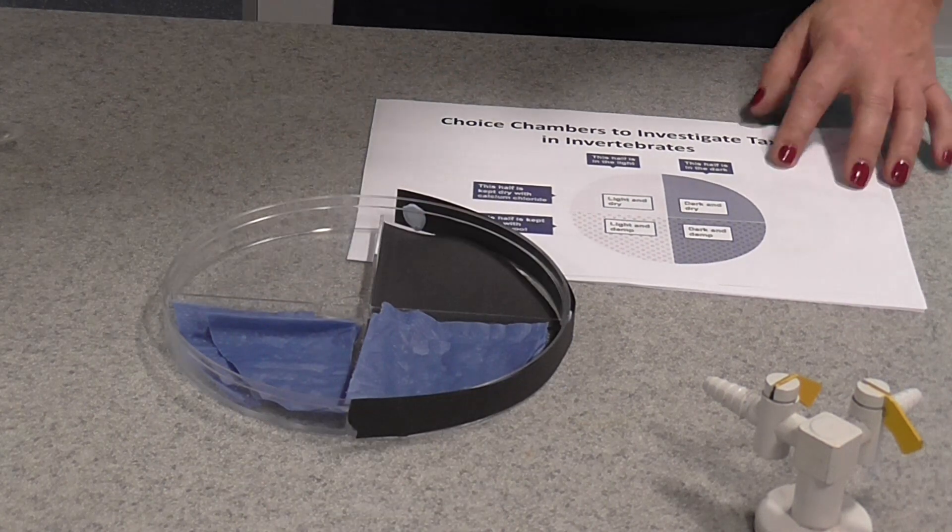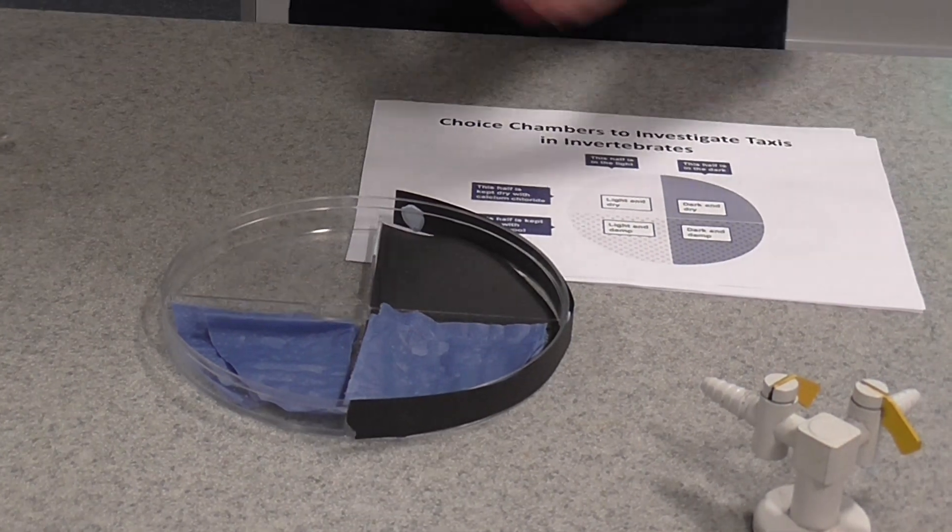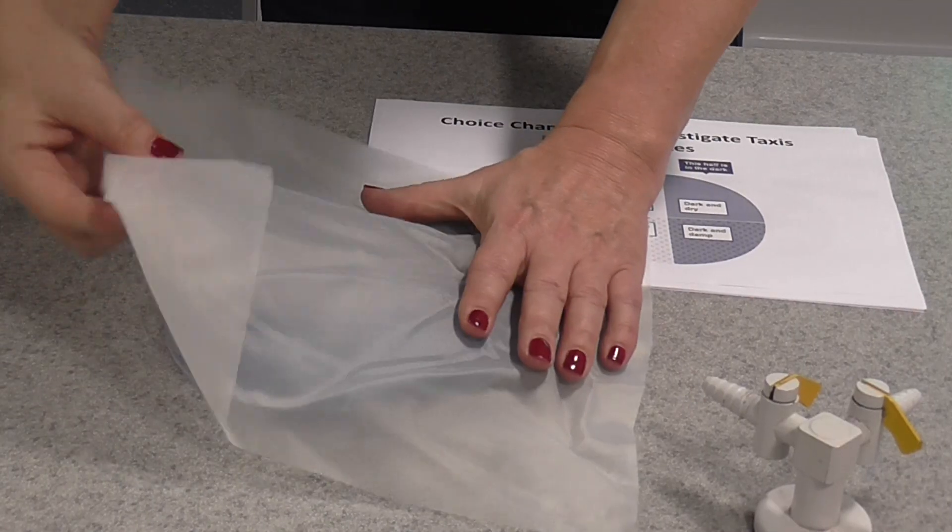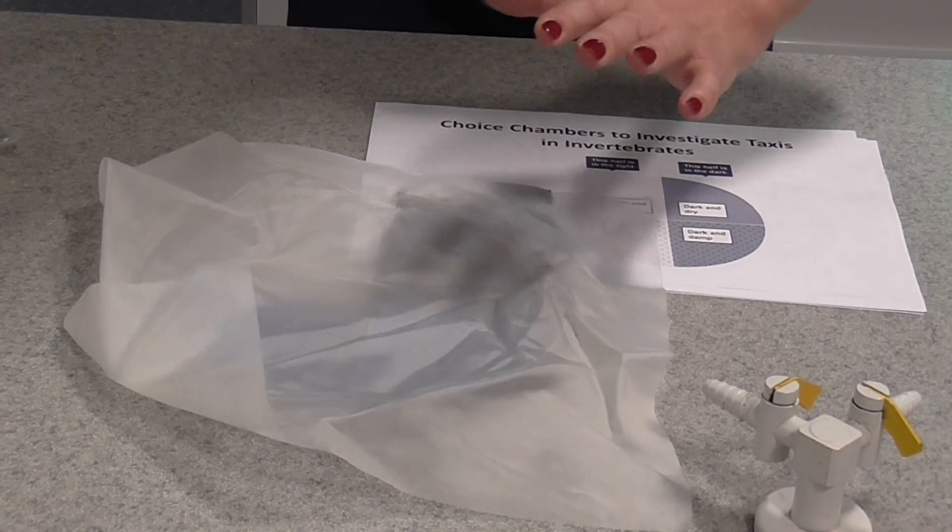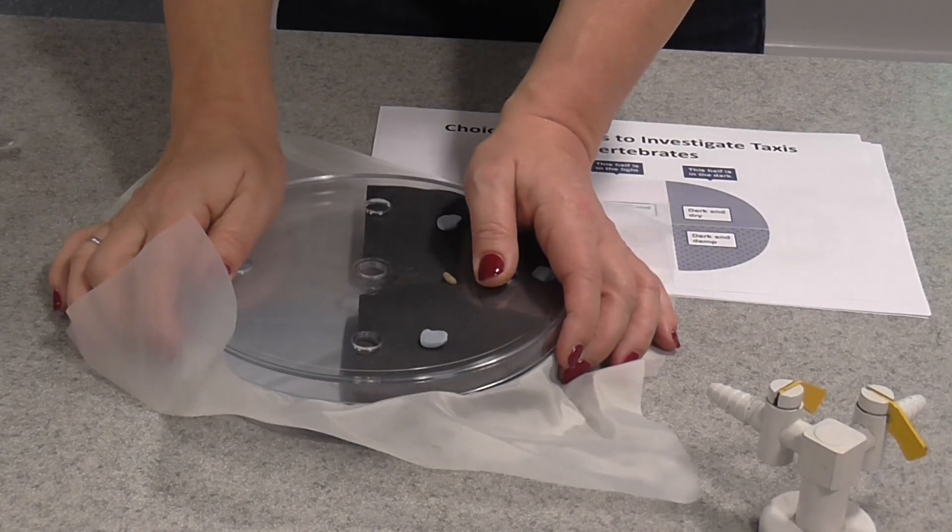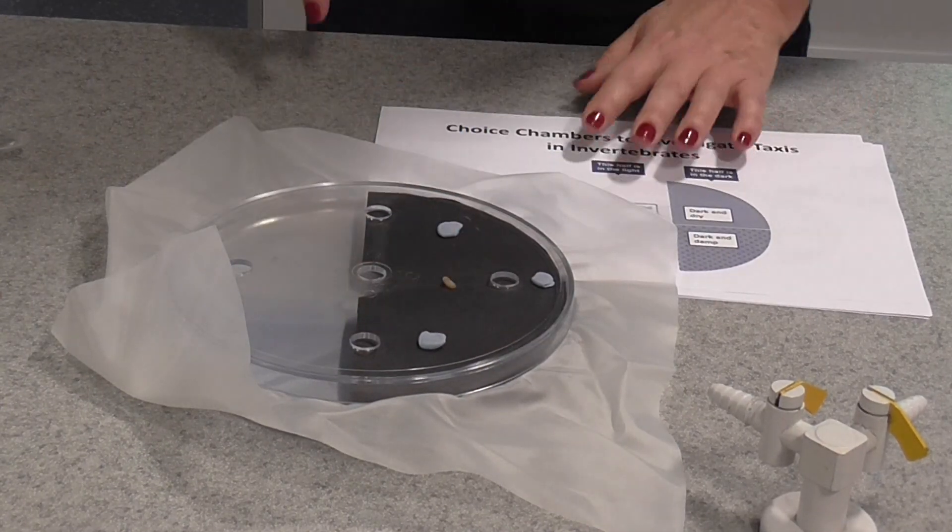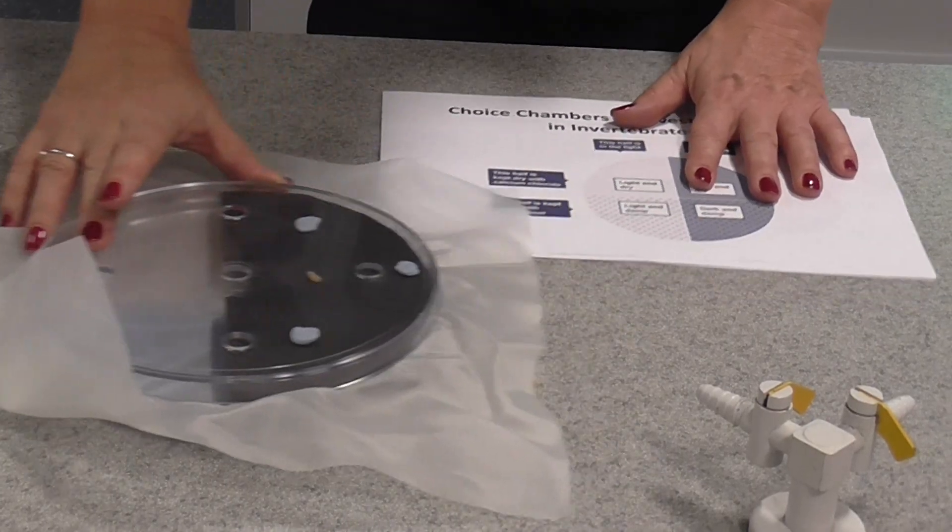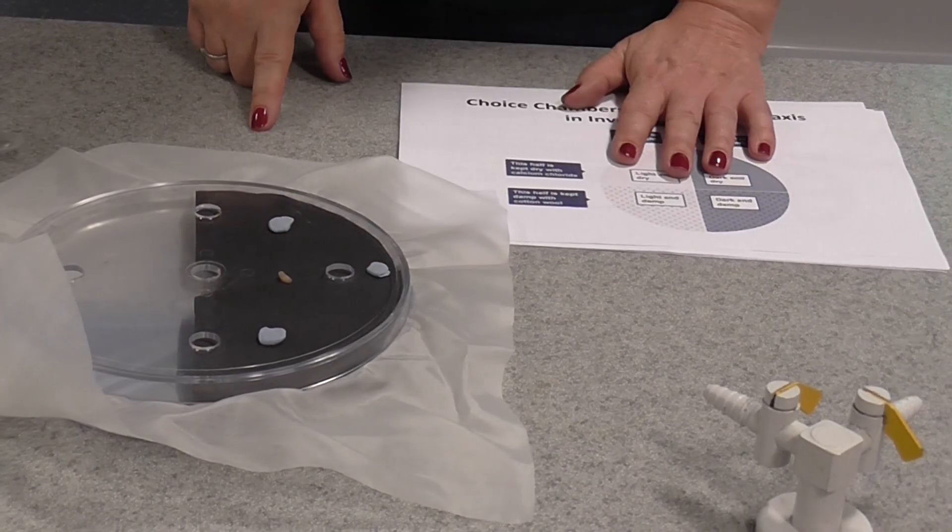So once we've set that up, the next thing we do, we place a thin nylon sheet over there and then we place the lid onto the choice chamber. You can see I've got a little escaped maggot from the last time I did it there. That shouldn't really be there, but we can ignore it.